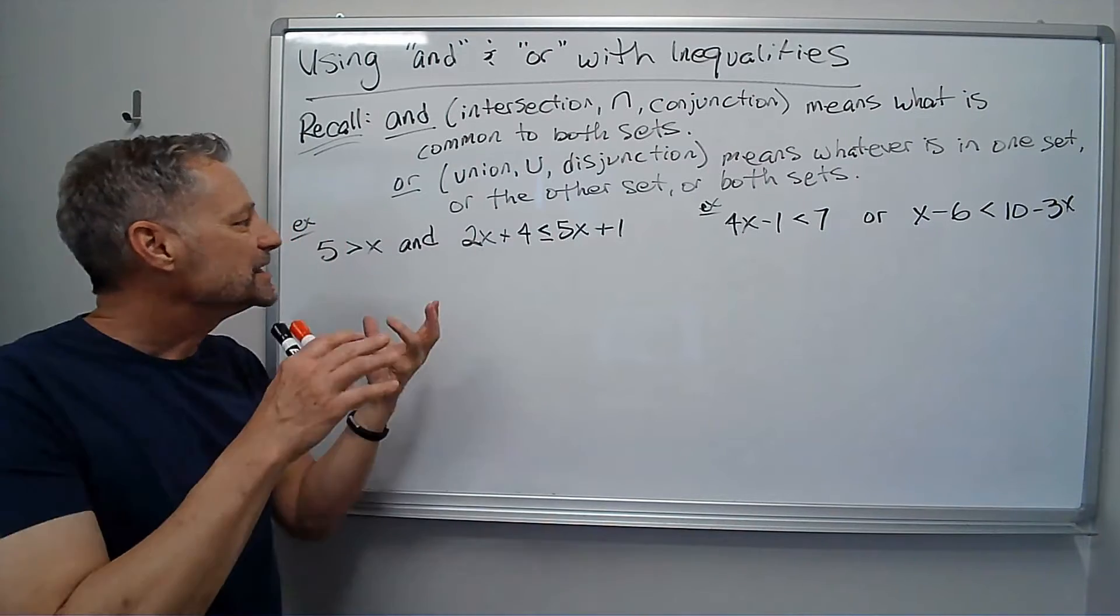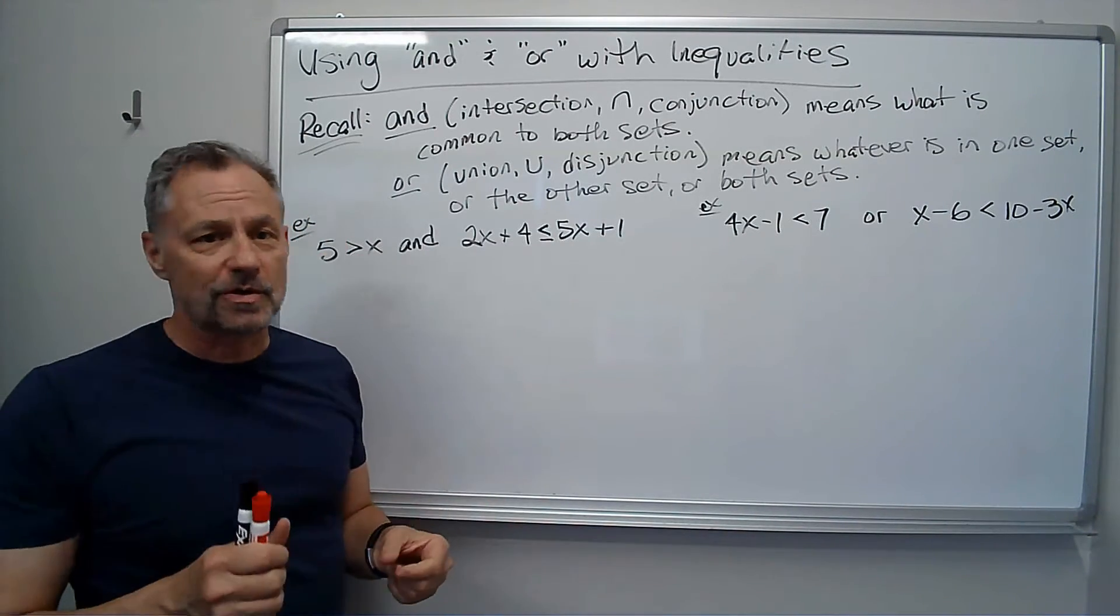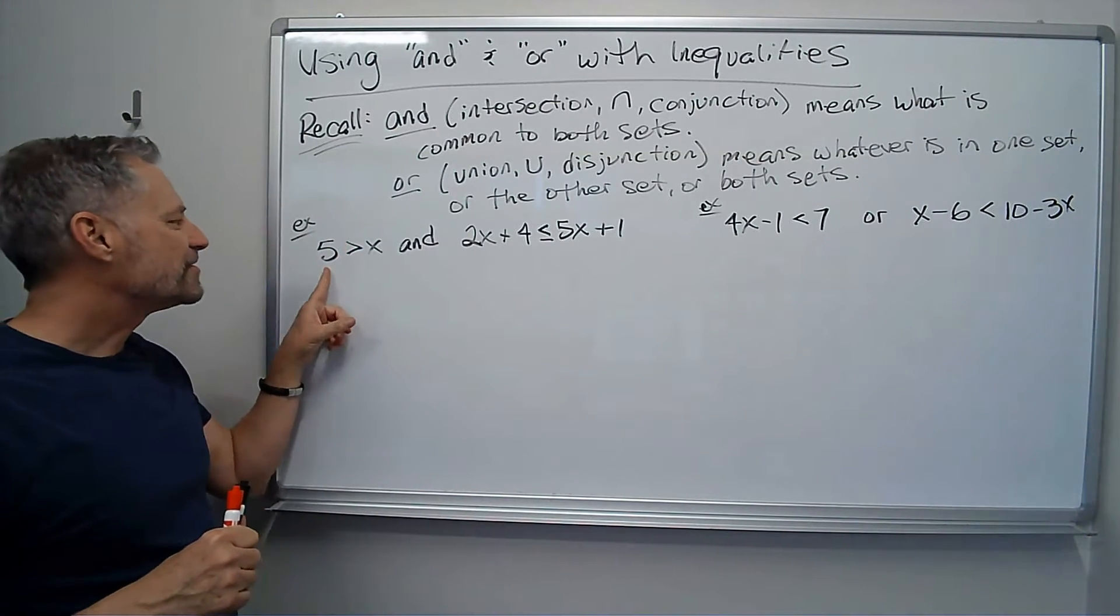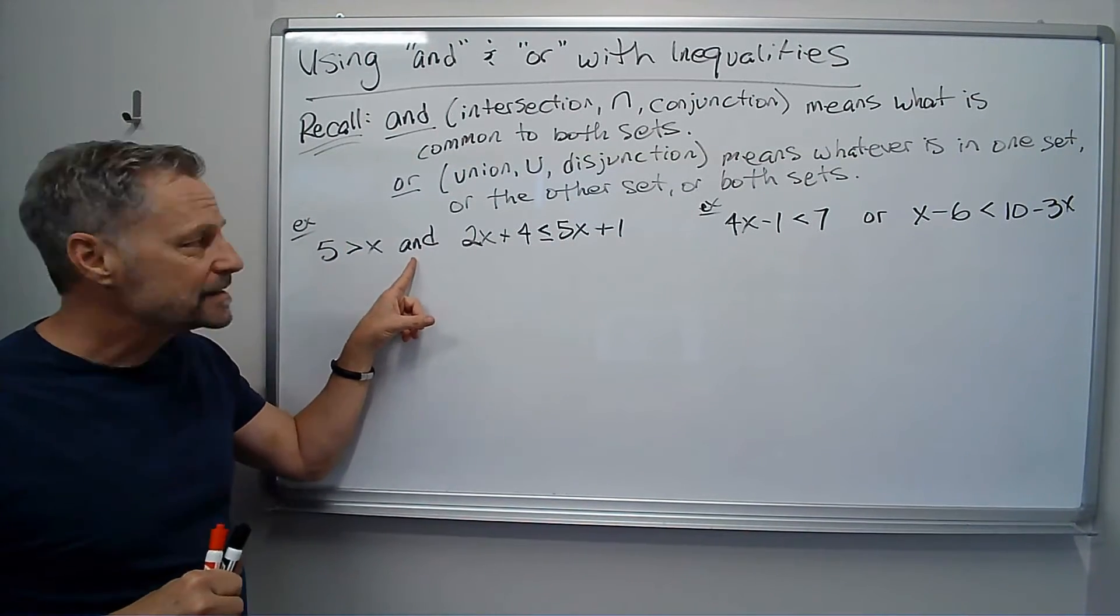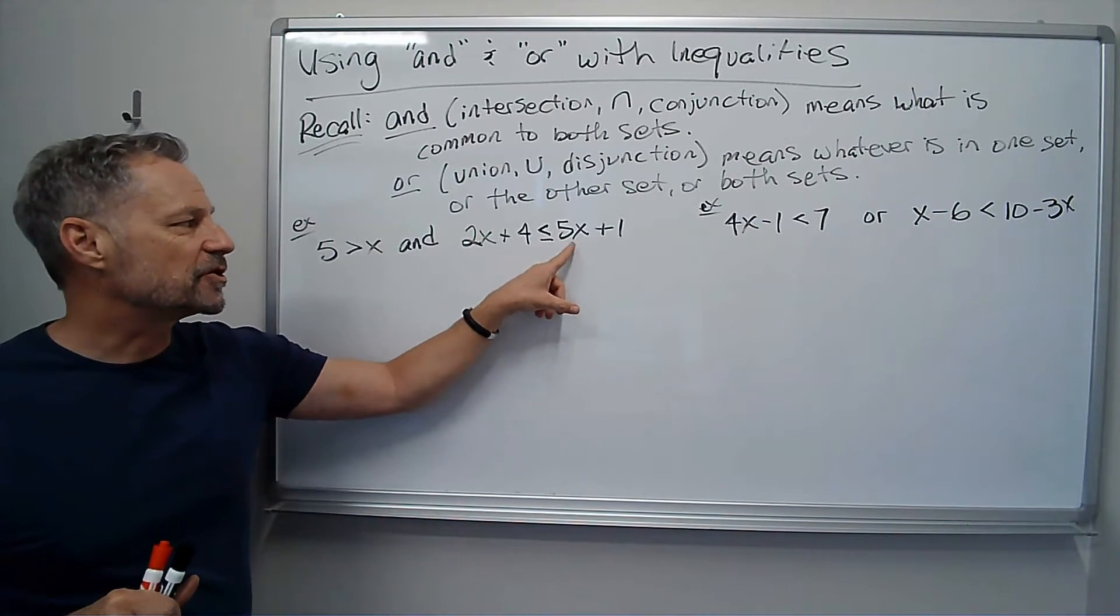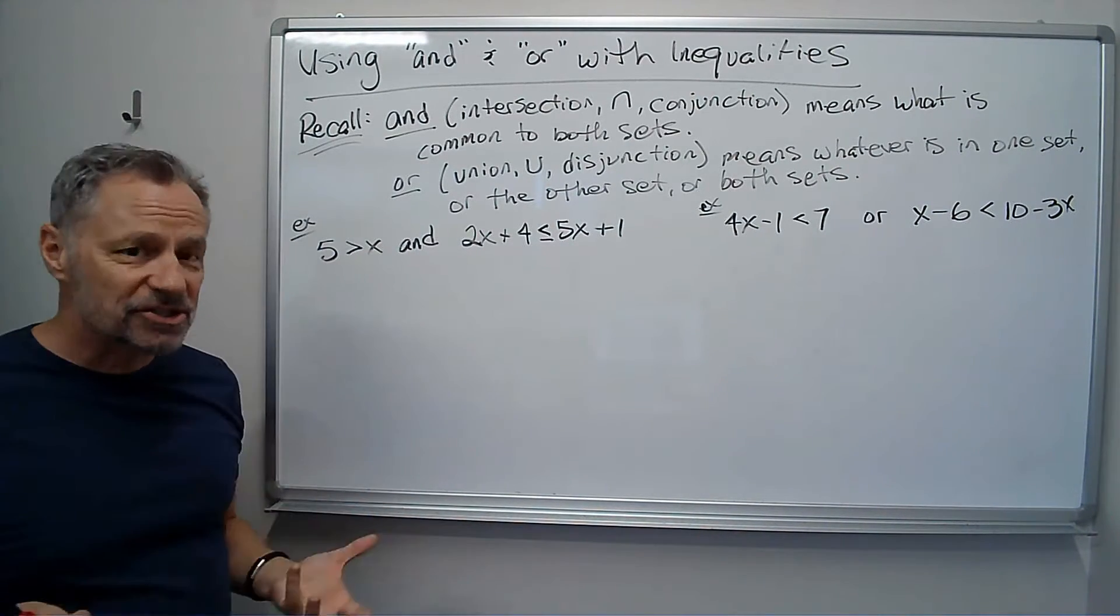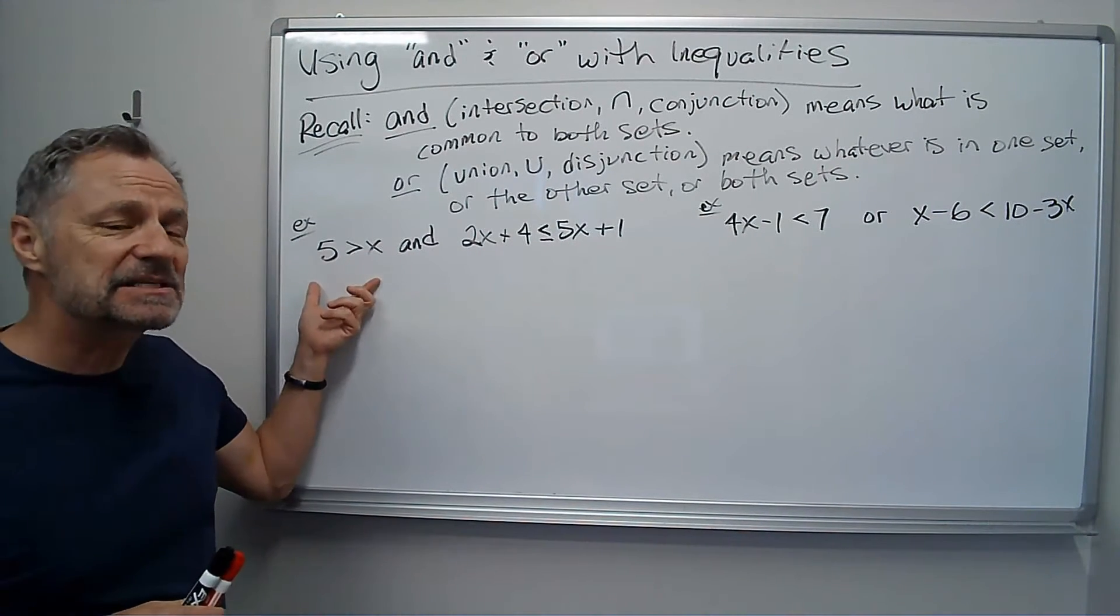Let's look at a couple problems and we'll get to our answers. We have 5 is greater than x, and 2x plus 4 is less than or equal to 5x plus 1. I'm going to solve both of these. This already has x by itself.